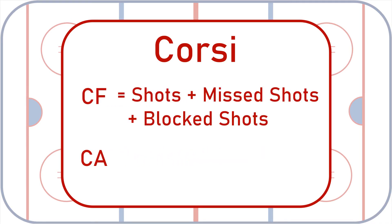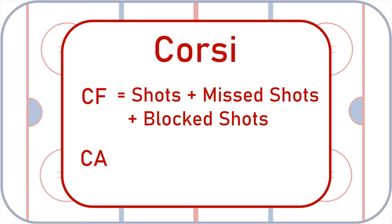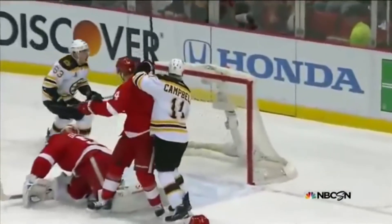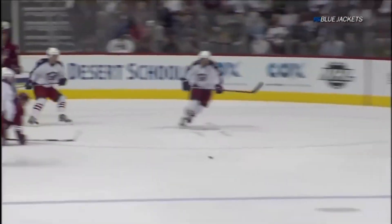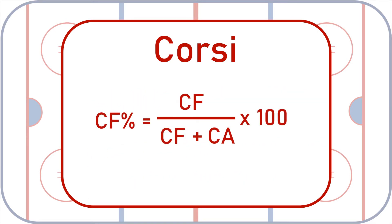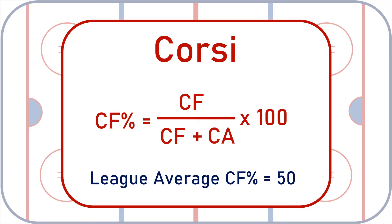Each player can be assigned a Corsi for and a Corsi against, abbreviated as CF and CA. When considering an individual player's Corsi, the stat counts every shot, shot attempt, and block shot taken by all players while that individual is on the ice. A shot is either a puck that results in a goal or is saved by the goalie; a missed shot goes past the net; and a blocked shot is stopped by a defender on its way to the goal. Each of these events by your own teammates counts in the Corsi for column, and each by the opposition in the Corsi against. We can then report a Corsi for percentage by weighing the for and against metrics. A Corsi for percentage of 50 means that your team had as many scoring chances as your opponent while you were on the ice. A Corsi for percentage above 50 means that your team had more shot attempts than your opponent while you were on the ice, and it's a positive.